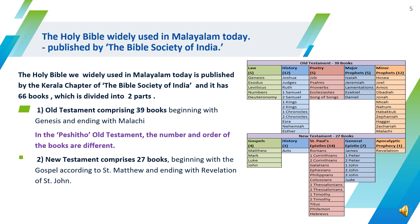The Holy Bible commonly used in Malayalam today is published by the Kerala chapter of the Bible Society of India. It has 66 books and is divided into two parts: the Old Testament and the New Testament. The Old Testament has 39 books, starting with Genesis and ending with Malachi, categorized as Law, History, Poetry, and Major and Minor Prophets.